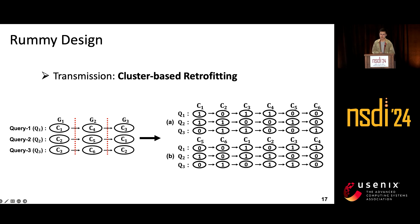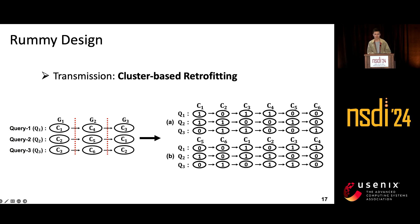I will now present the design of our system. The first technique is cluster-based query scheduling. The left figure illustrates the original query plan with redundant transmission. This technique transforms the original query-based plan into a cluster-based plan. As shown in the right figure, this plan prioritizes clusters — if cluster C1 is accessed, all queries related to C1 are executed immediately, then the next cluster is transferred. This ensures each cluster is transmitted at most once, eliminating redundant transmission. Furthermore, if clusters like C5 and C6 remain in GPU memory before processing a batch, the query plan computes them first, further reducing the number of transmissions.